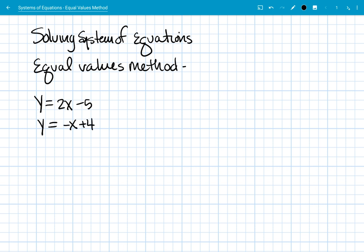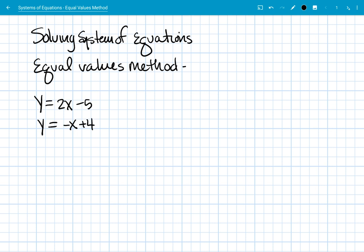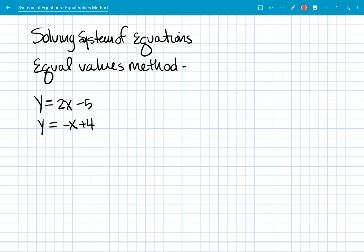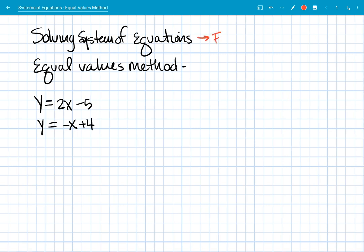Now if we graphed those two equations, they'd both be lines and there'd be a point of intersection, a place where the two lines intersect each other. And so that's what it means to solve a system of equations. Solving a system of equations means to find the point of intersection, which is an ordered pair in a graph. But the method we're going to use isn't using a graph, it's an algebraic method.